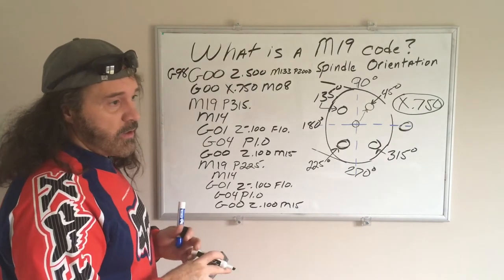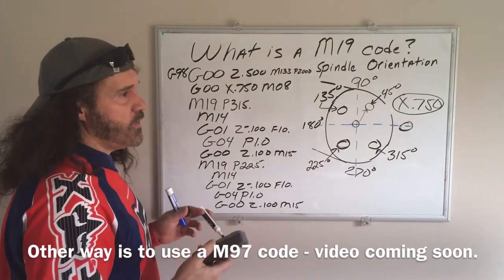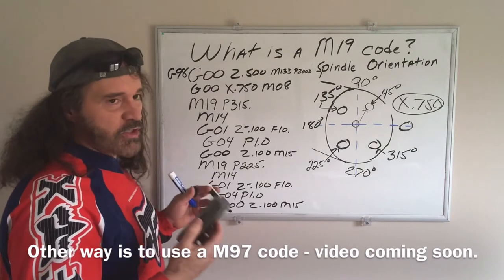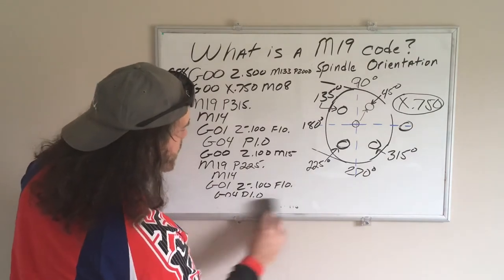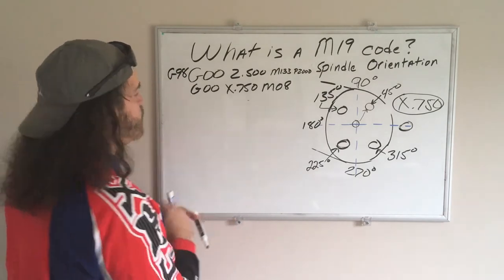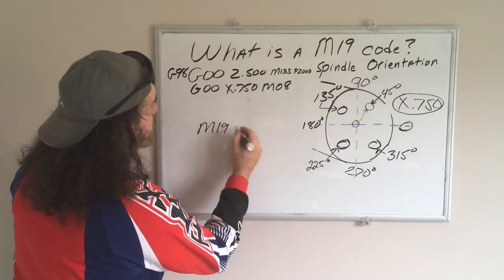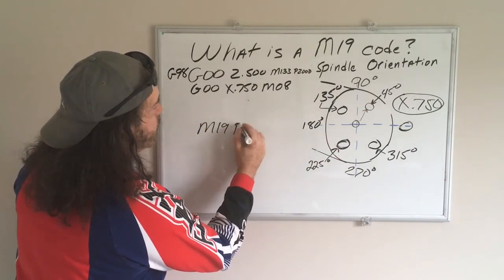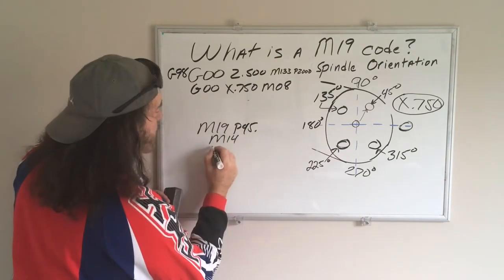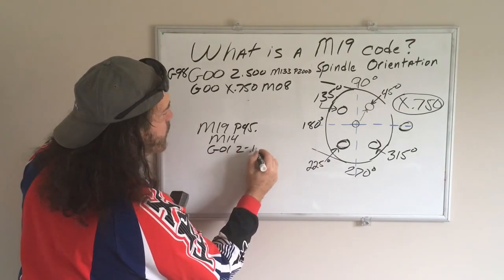You can just rewrite that. There are other ways to do this where I have used, well I don't want to get too confusing, it's like a subroutine call. Anyways, that's how that is. And then when you're all done, say you did your final hole, you did your M19 P45.